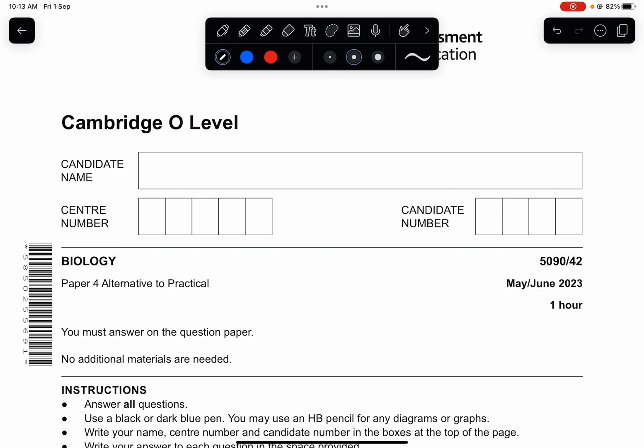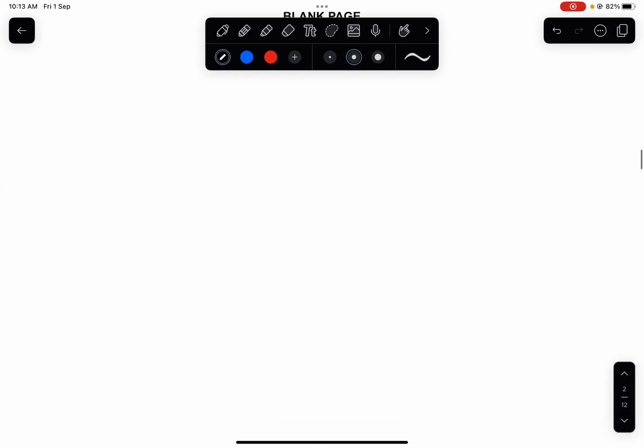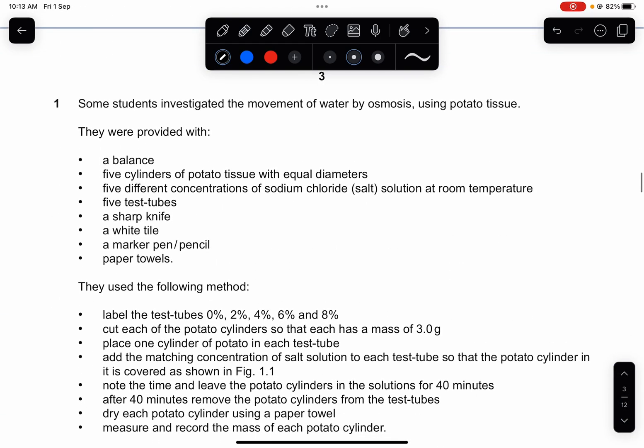So let's start solving this video, and if you guys want to know more tips on how to score, the cards above of this video will be shared. Question 1. Some students investigated the movement of water by osmosis using potato tissue. They were provided with all of these apparatus. Make sure you have a look at it.